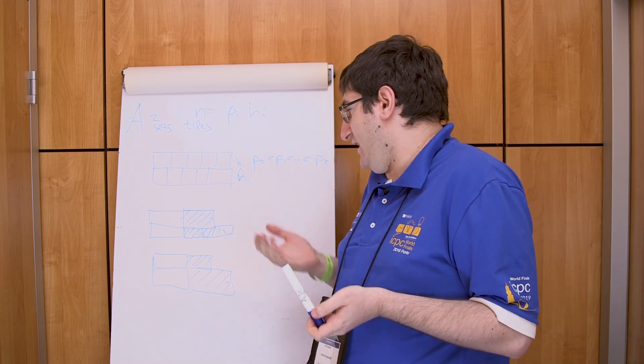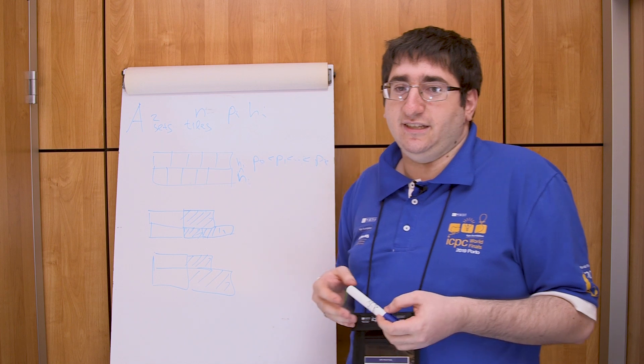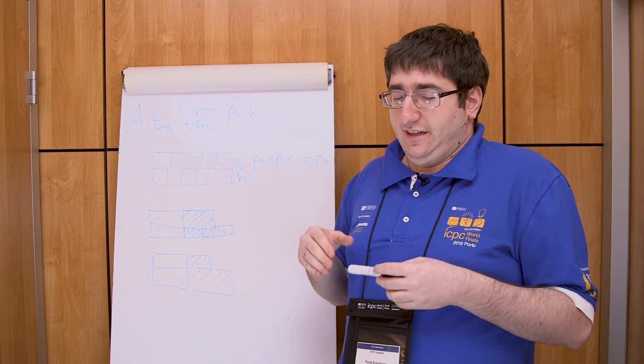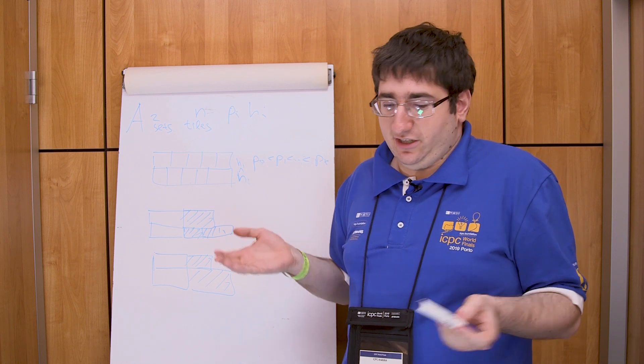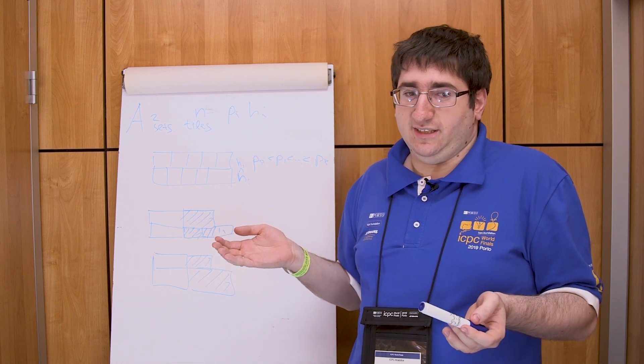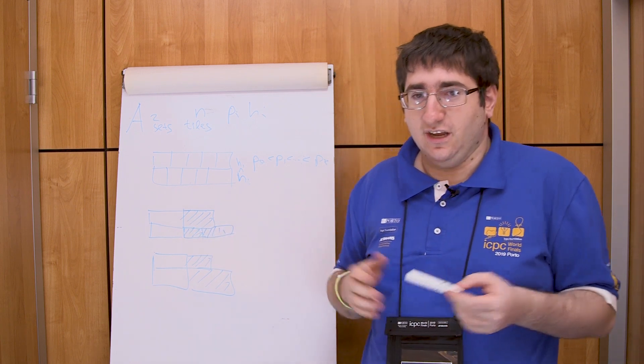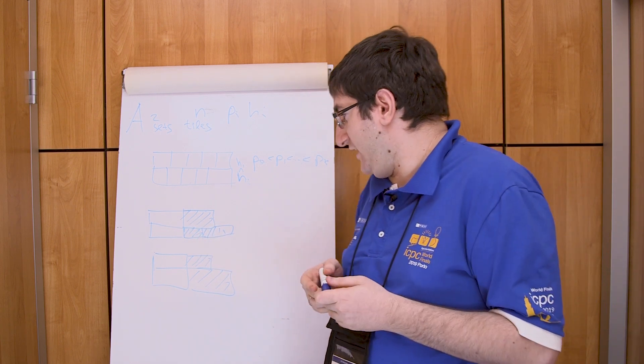This data structure should support two queries: adding a new tile and getting the minimal tile which is at least this. These data structures are well known and can be something like std set or tree set in Java or some balanced tree.